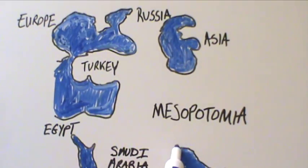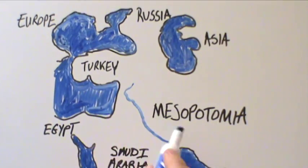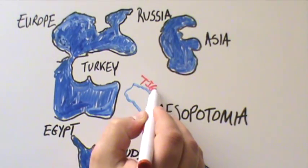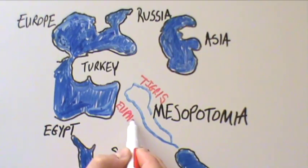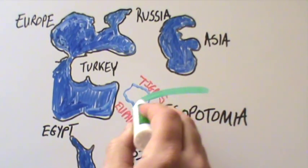Mesopotamia is considered the beginning of civilization. The word Mesopotamia comes from the Greek word meaning land between rivers. The rivers are the Tigris and Euphrates.